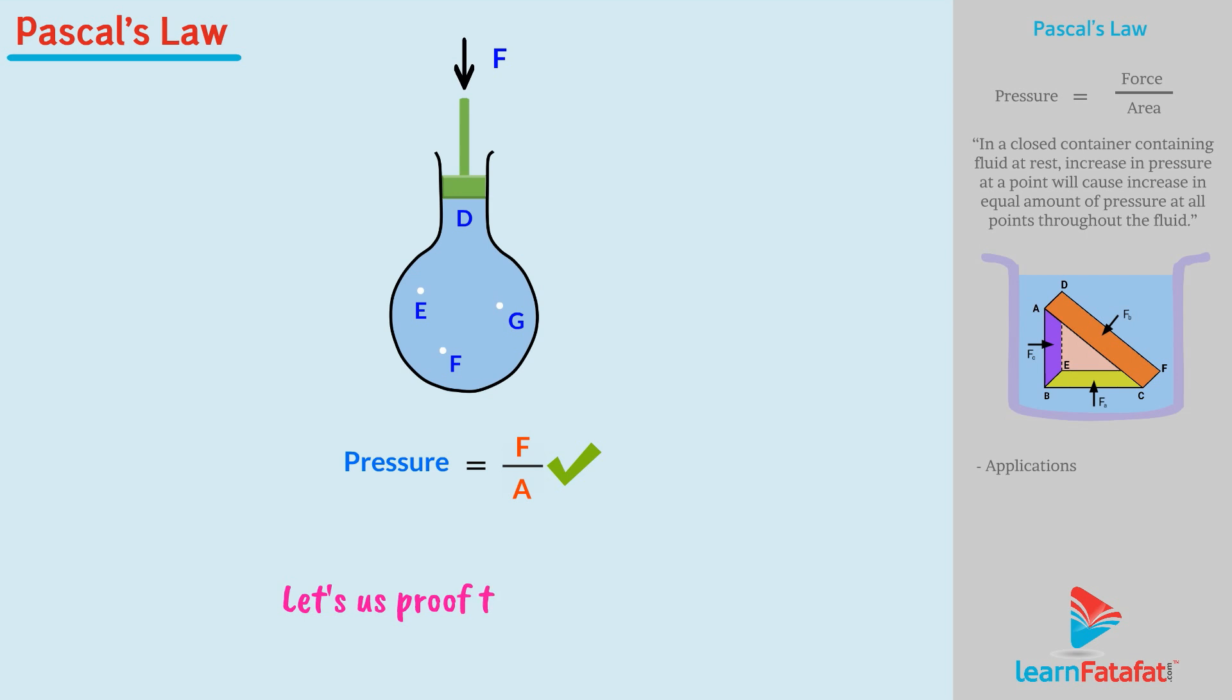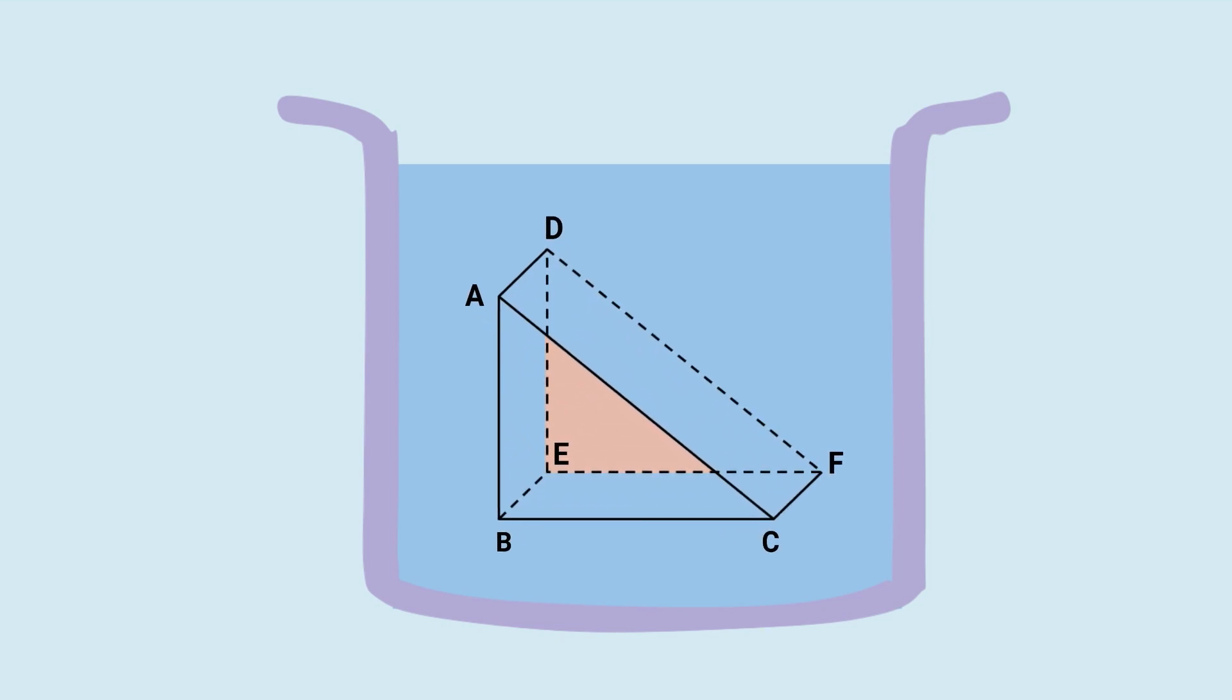Dear students, let us study the proof of this law. Consider a small right-angled prism ABCDEF inside the flask. The object is very small such that we can consider every element on its surface at equal depth from the surface of liquid. For understanding purpose, we have enlarged its surface.